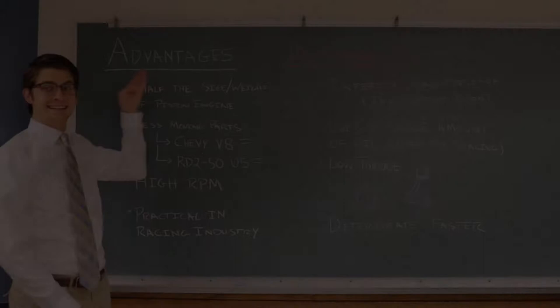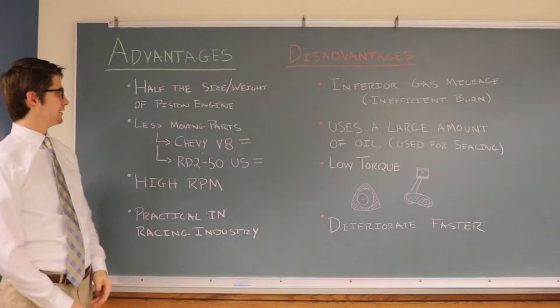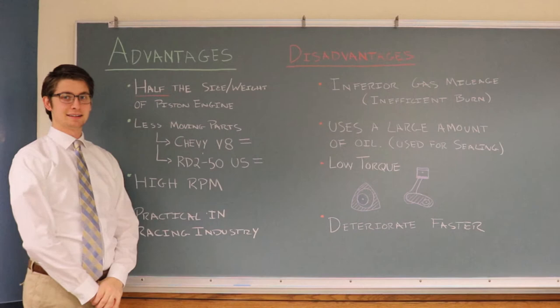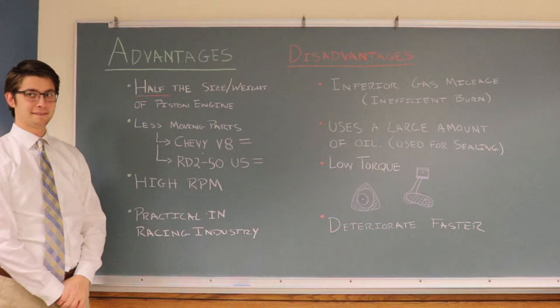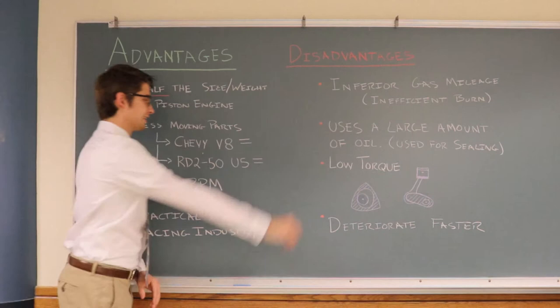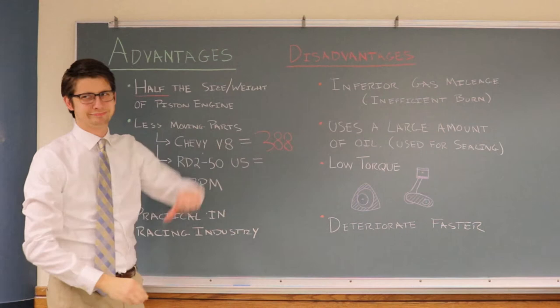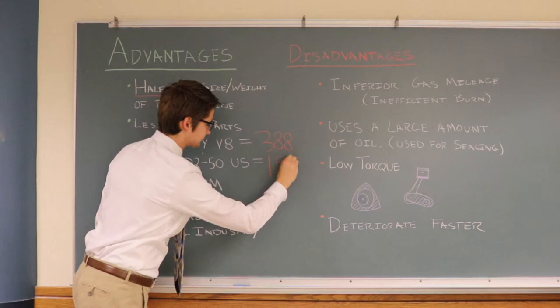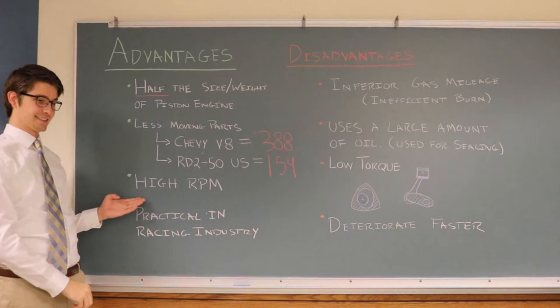The advantages and disadvantages of the Wankel engine. An upside to the rotary engine is that it is half the size and weight of the regular piston engine, but with similar output. Also, in a rotary engine there are less than half the moving parts than in the corresponding piston-cylinder engine. For example, in a Chevrolet V8 there are 388 moving parts, while a rotary engine from the same time period with similar output has only 154 moving parts. This simplicity and lack of rotating mass means that rotary engines can turn at high revolutions per minute, making them well suited to the racing industry.